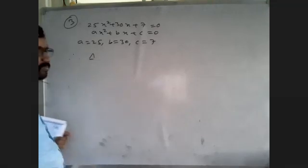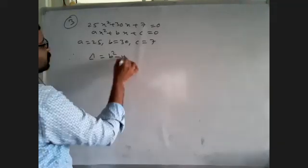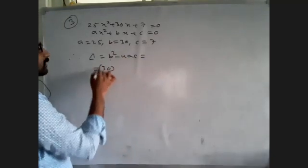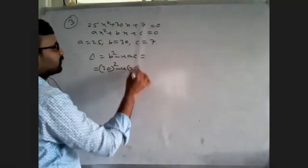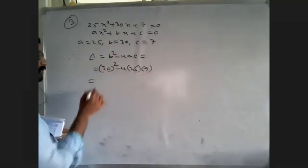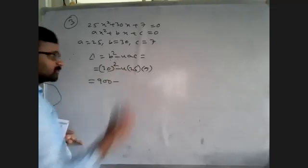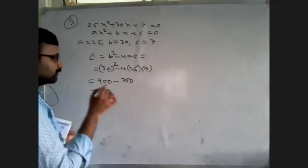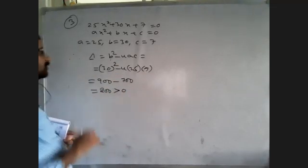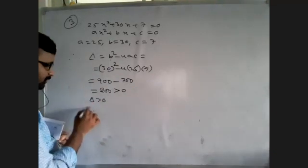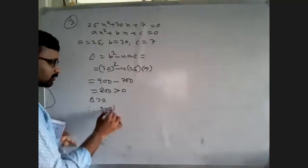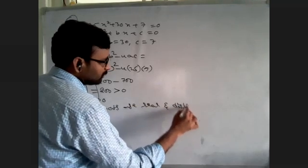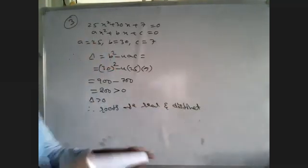To find the nature of the roots, we need to find the value of Delta: Δ = B² - 4AC = 30² - 4×25×7 = 900 - 700 = 200, which is greater than 0. So Delta greater than 0 means the roots are real and distinct.